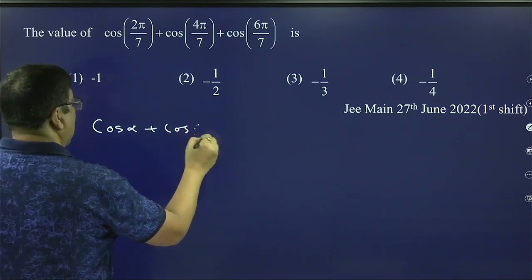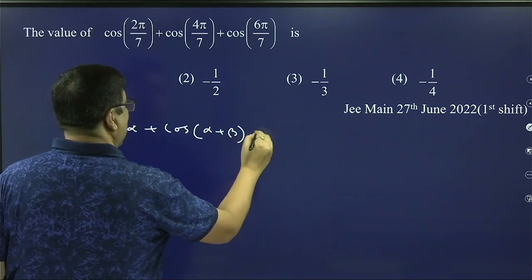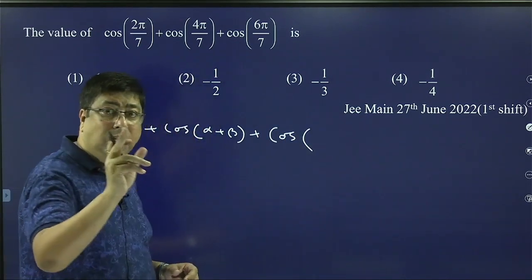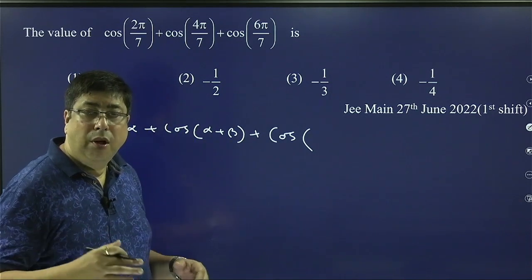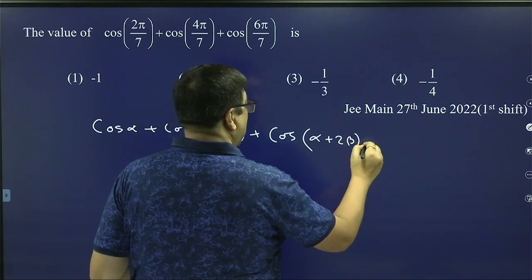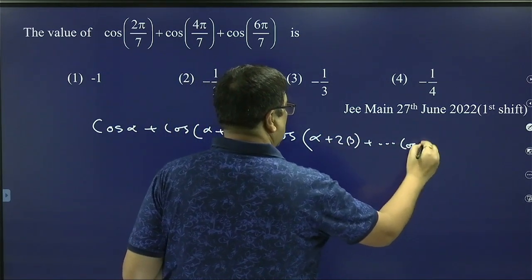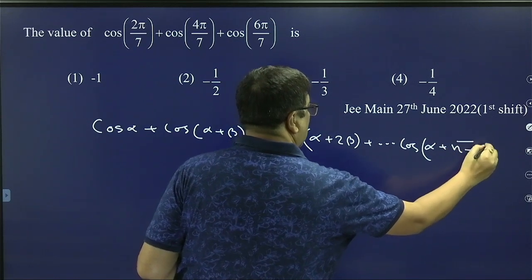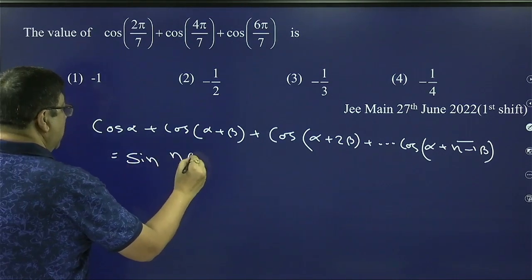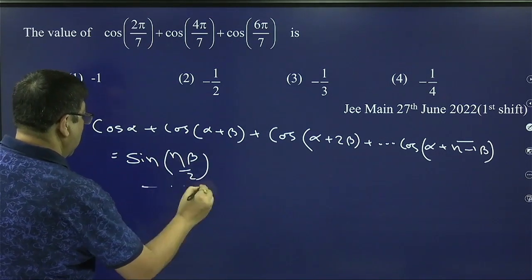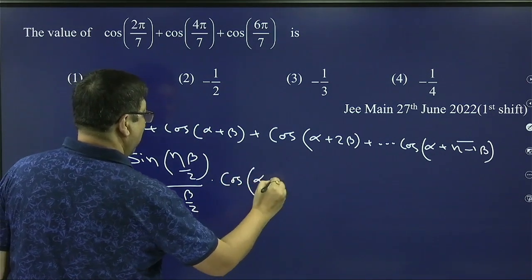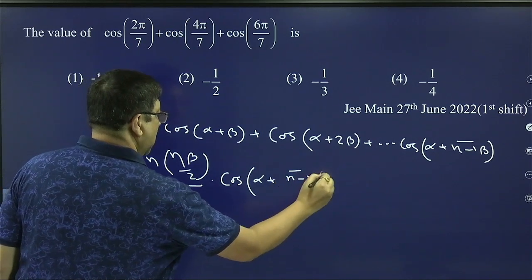cos(α) + cos(α + β), very important series, sin series and cos series. And it is always required, not in trigonometry, also in calculus and all others. So we have to remember this. Plus cos(α + 2β) plus continuation cos(α + (n-1)β). It means total n terms can be written as [sin(nβ/2) / sin(β/2)] × cos(α + ((n-1)β/2)).